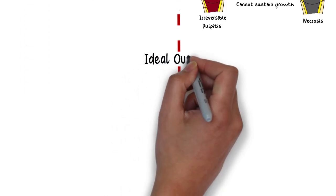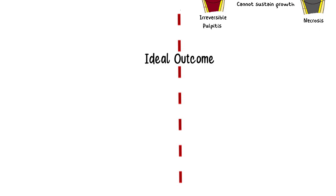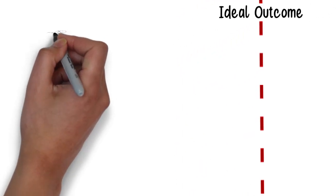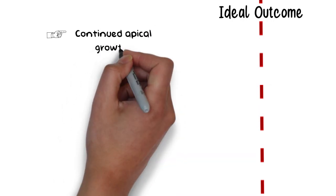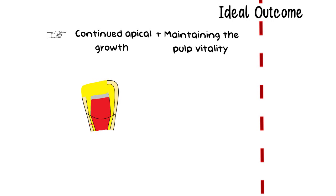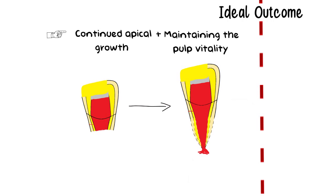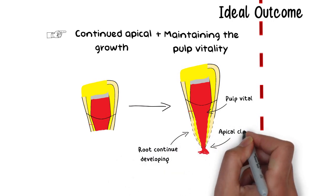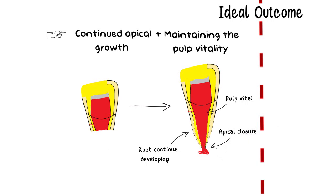The ideal outcome of Apexogenesis therapy is continued apical growth of the root while maintaining pulp vitality, therefore allowing dentine formation and root enclosure. The pulp may remain vital for indefinite periods of time. By keeping the pulp alive, the remaining odontoblasts can continue depositing dentine, increasing the thickness of root dentine walls and making the tooth less prone to fracture. Apexogenesis has a better success rate with partial pulpotomy or Cvek pulpotomy since more of the healthy pulp is left in the tooth.